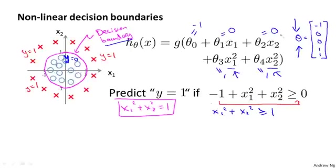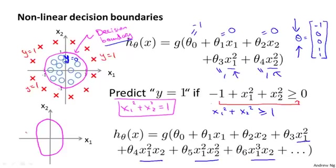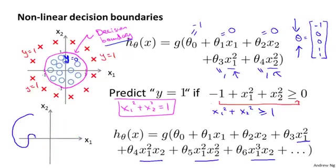Let's look at an even more complex example. Can we come up with even more complex decision boundaries? If I have even higher-order polynomial terms — things like x1 squared, x1 squared times x2, x1 squared times x2 squared, and so on — with much higher-order polynomials it's possible to get even more complex decision boundaries. Logistic regression can find decision boundaries that may be an ellipse, or with a different setting of parameters, some other funny shape. For even more complex examples, you can get decision boundaries with more complex shapes, where everything inside is y equals 1 and everything outside is y equals 0. So these higher-order polynomial features allow very complex decision boundaries.